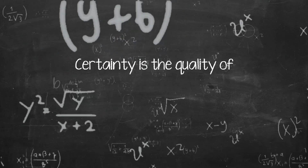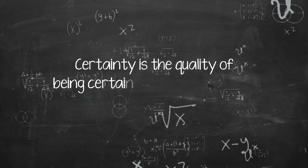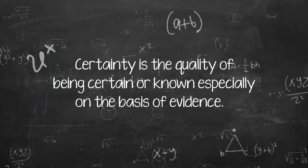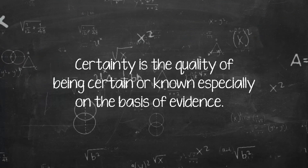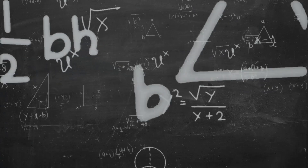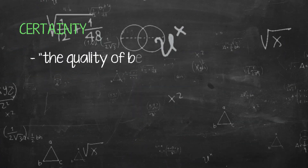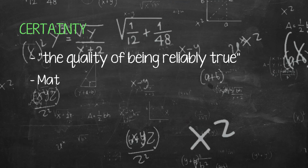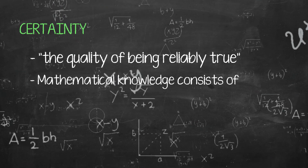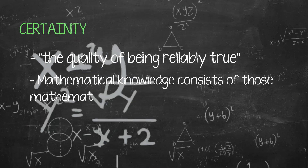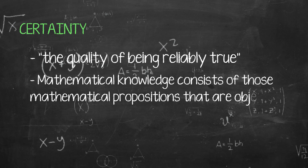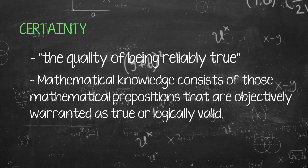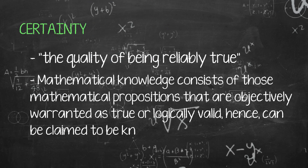Certainty is the quality of being certain or known, especially on the basis of evidence — the quality of being reliably true. Mathematical knowledge consists of those mathematical propositions that are objectively warranted as true or logically valid, and hence can be claimed to be known.